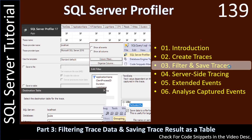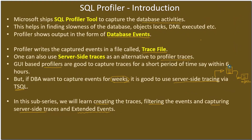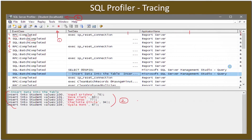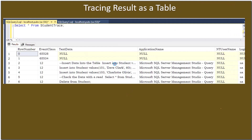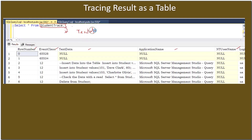After capturing the traces, it is possible to store the trace info into a table. Once you store trace information into a table, you can see row number, event class, text data, and whatever you saw previously in the UI. In real world scenarios it may be thousands — 20,000 or 40,000 records — and analyzing those records in the UI will not be easy, so you can export it to a table.